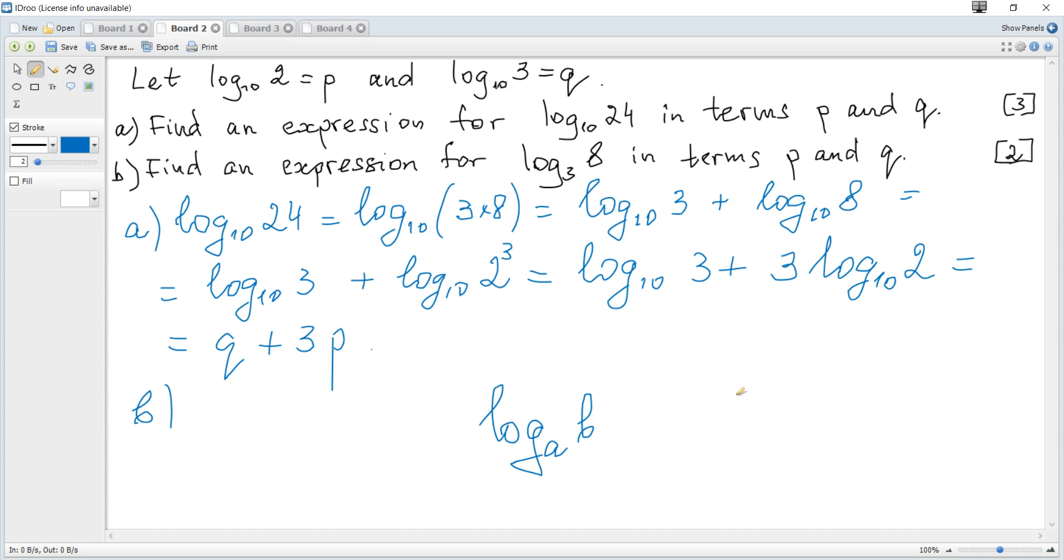And hence it becomes log to the base 3 of 8 equals log to the base 10 of 8 over log to the base 10 of 3. And again, it's log to the base 10 of 2 cubed, which is 3 times log to the base 10 of 2, divided by log to the base 10 of 3.